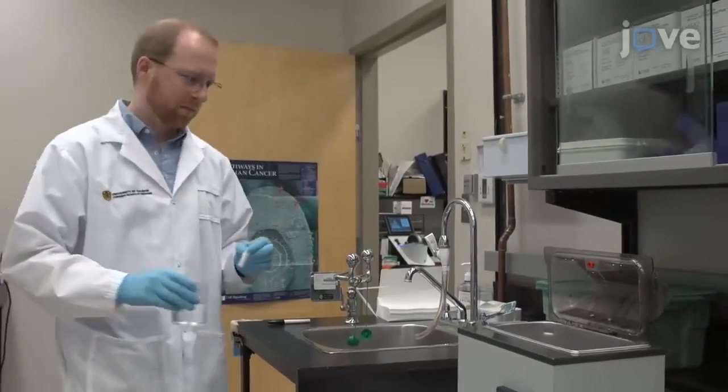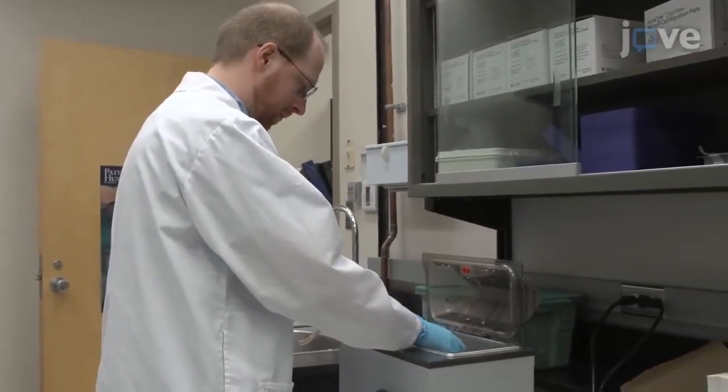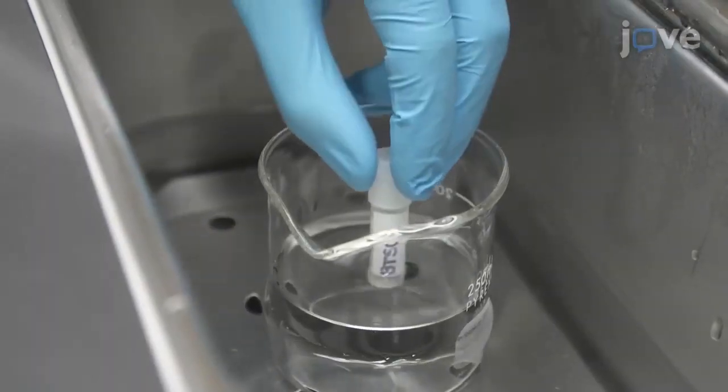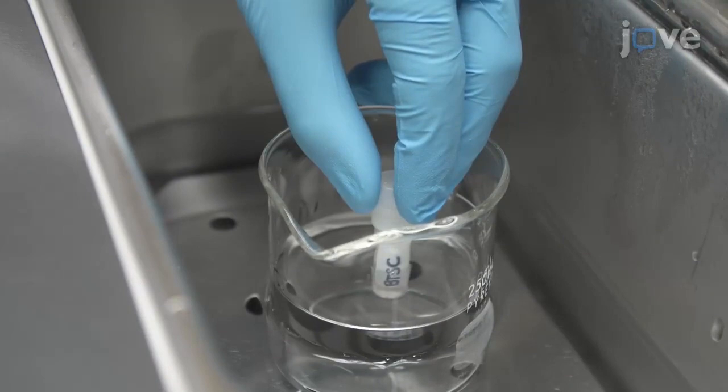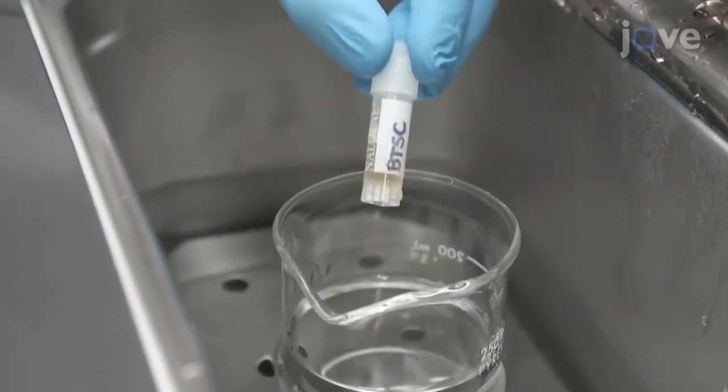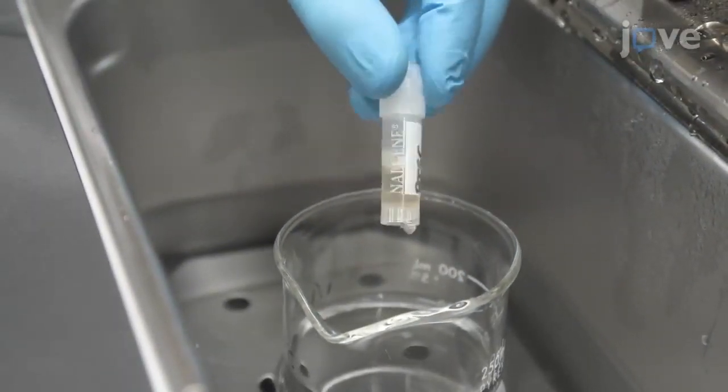Begin by thawing a vial of cryogenically preserved BTSCs in a beaker of 70% ethanol placed inside a 37 degrees Celsius water bath just until the last of the ice has thawed.